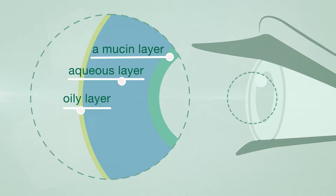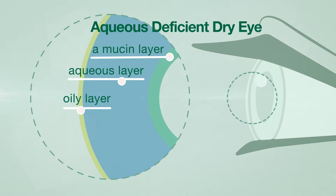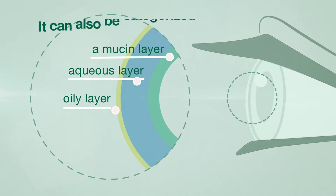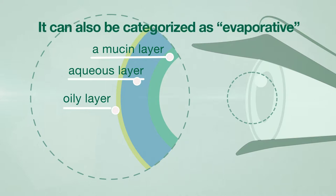Dry eye can be categorized as aqueous-deficient dry eye, which means there is a lack of production of the aqueous or watery component of the tears. It can also be categorized as evaporative.